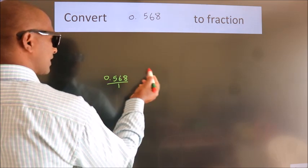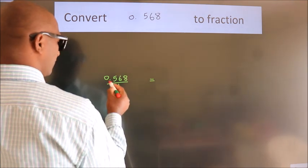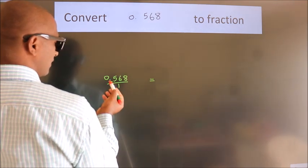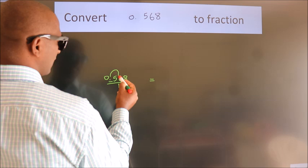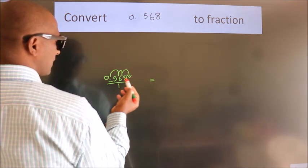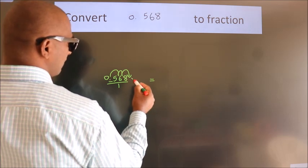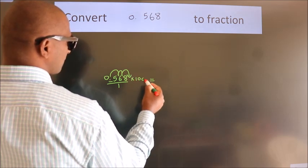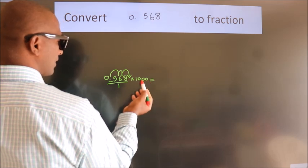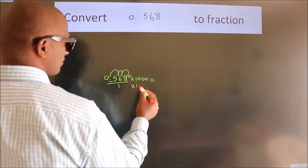To convert this to fraction, we have to move this decimal after 1, 2, 3 numbers. To move this decimal after 3 numbers, we have to multiply it with 1000. Whatever number you are multiplying in the numerator, in the denominator also do the same.